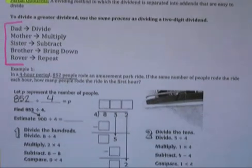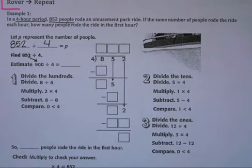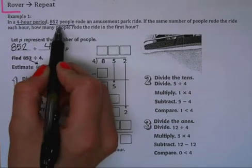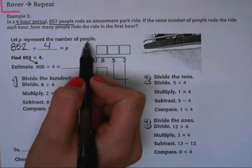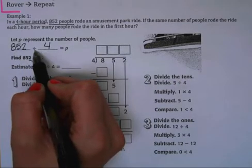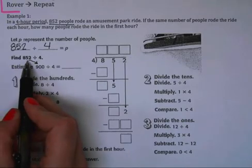Now taking a look at example one. In a four-hour period, 852 people rode an amusement park ride. If the same number of people rode the ride each hour, how many people rode the ride in the first hour? I've already underlined some key words here: four-hour period and 852 people. If we let p represent the number of people, we have 852 total divided by four hours. So we're finding 852 divided by 4.